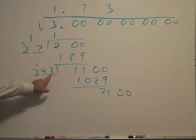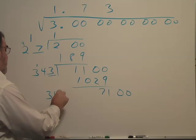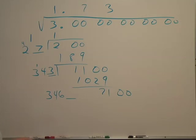The divisor is going to be, I have to double this 3 so it becomes a 6, so now it's 346. But then I have to place another digit here.